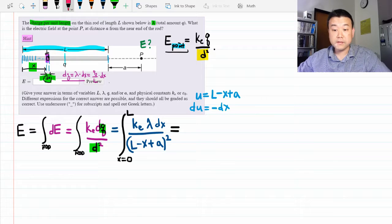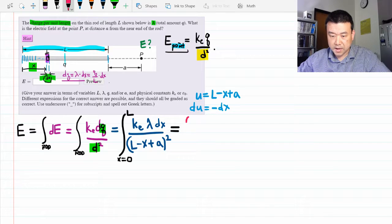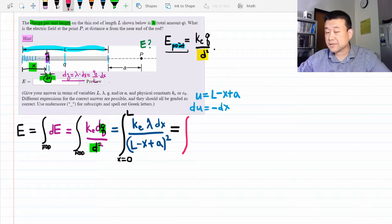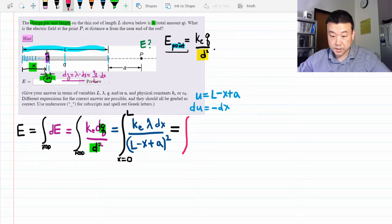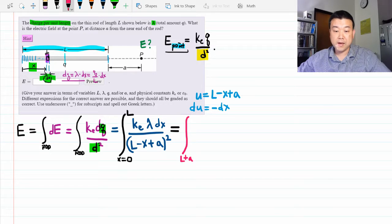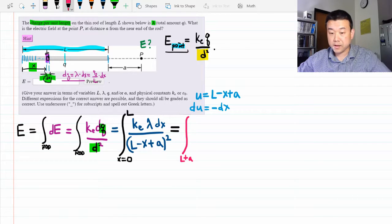And I like to change the limits as I do the substitution. It cuts down on a lot of possible mistakes. So let me plug in x equals 0. That gives me L plus A as the lower limit. And plug in x equals L.